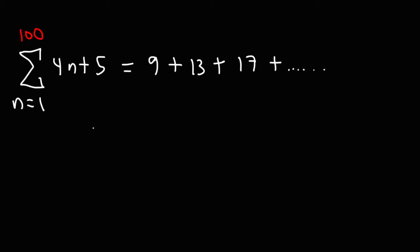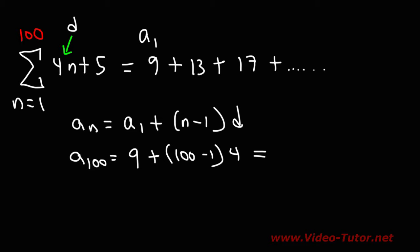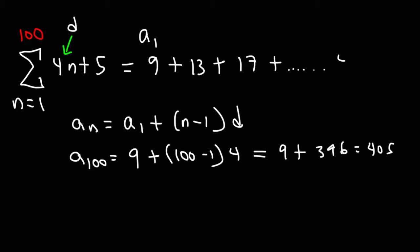To find the nth term in an arithmetic sequence, it's a sub n equals a sub 1 plus n minus 1 times d. The first term is 9, the common difference d is 4. To find the 100th term, replace n with 100. 100 minus 1 is 99, times 4 is 396 — you can do 4 times 100 which is 400, minus 4 gives 396. 9 plus 396 is 405. So the 100th term in this sequence is 405.